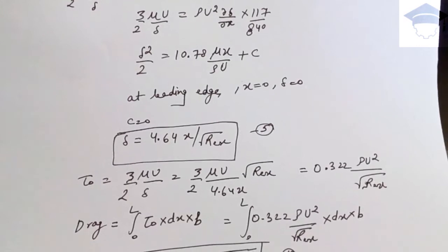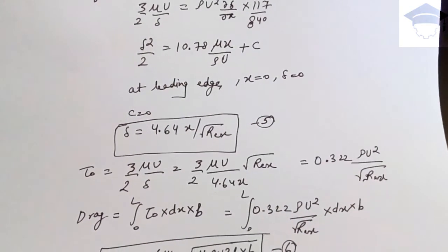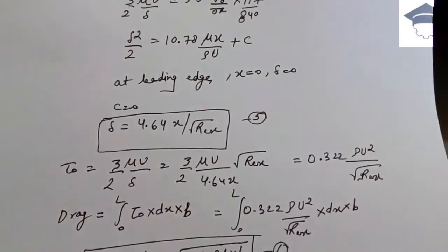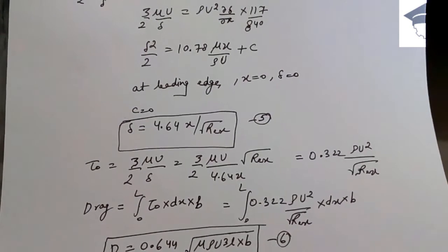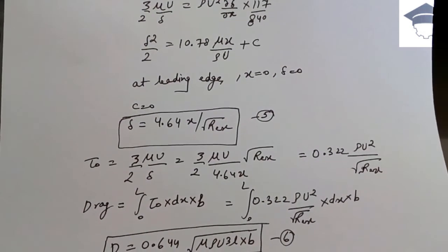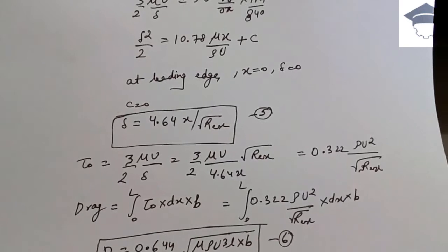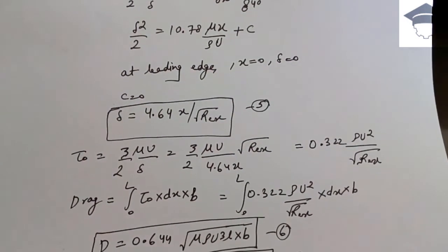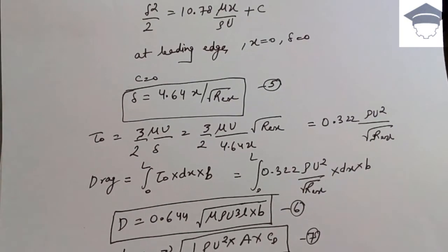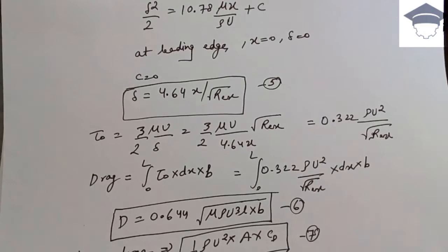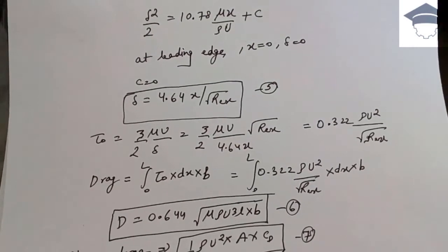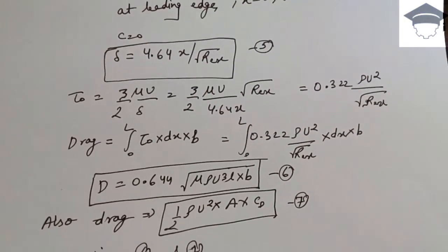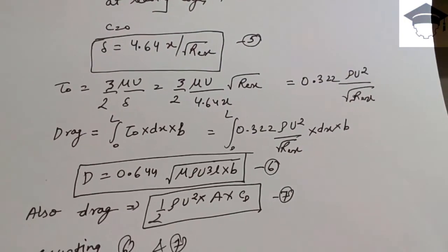Now shear stress τ₀ = (3/2)(μU/δ). Substituting equation 5 for δ, we get τ₀ = 0.322·ρU² / √(Re_x). Also, drag force = ∫₀ᴸ τ₀ · dA, where the elemental area is dx·b (b is the width). Integrating, drag force = ∫₀ᴸ 0.322·ρU²/√(Re_x) · dx·b, which gives drag force = 0.644·√(μ·ρ·U³·L)·b.